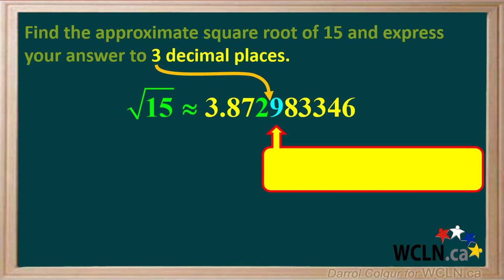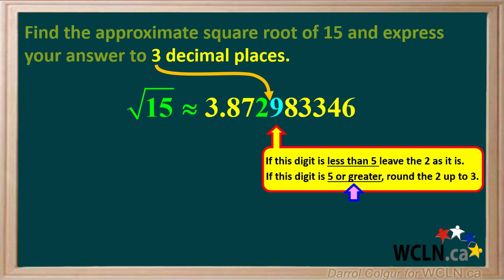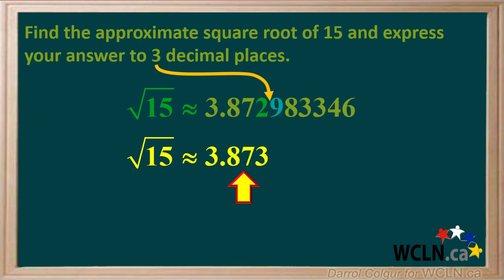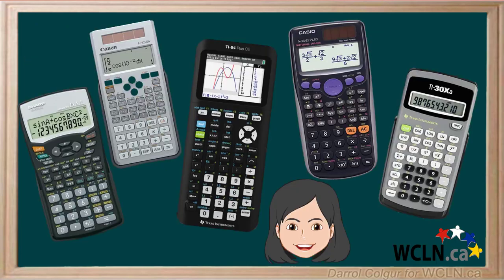At this point, check the digit that follows the 2. If the digit following the 2 is less than 5, leave the 2 as it is. But if the digit following the 2 is 5 or greater, you must round the 2 up to a 3. Here the digit is 9, which is obviously 5 or greater. So in this case, you round the 2 up to a 3. You can state that the square root of 15 is approximately 3.873 when rounded to 3 decimal places.